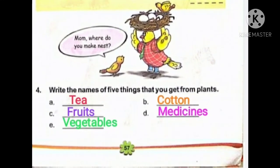Now the last question, question number four: write the names of five things that you get from plants. Plants se milne wali koi bhi paanch cheezon ke naam likhiye. Aap ne chapter ka explanation dekha hoga, usmein hamne bahut sari cheezein padhi jo hume plant se milti hai. Answer: Tea — chai jo hum pite hai, uski pattiyan hume plants se milti hai. Second, cotton — ped se hume cotton milta hai jisse hum kapde banate hai. Fruits — jitne bhi phal aap khate hai, woh hume plants se milte hai. Medicines — jo dawaiyan hum khate hai, use karte hai, woh bhi hume plants se milti hai. Aur vegetables — jitni bhi sabziyan hai, woh bhi hume plants se milti hai.